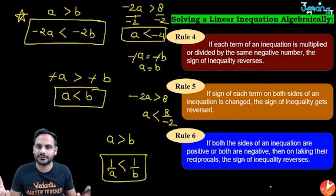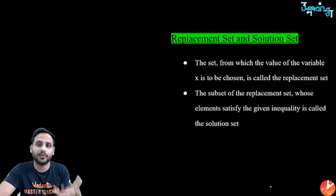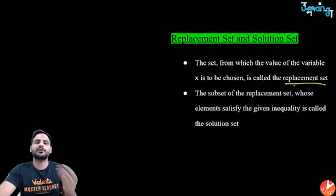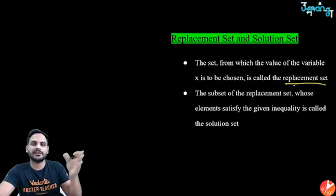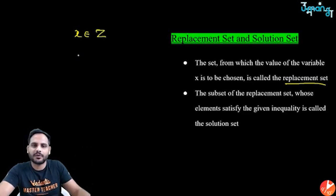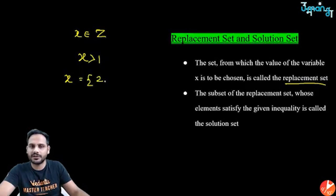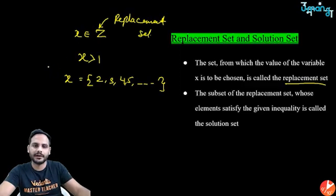Understand these rules and everything becomes easy. Now, the replacement set is the set of allowed values of x — for instance, x belongs to whole numbers or integers. The solution set is the set of values of x that satisfy the inequality. For example, if x belongs to integers and the solution is x > 1, then the solution set is {2, 3, 4, 5, ...}.